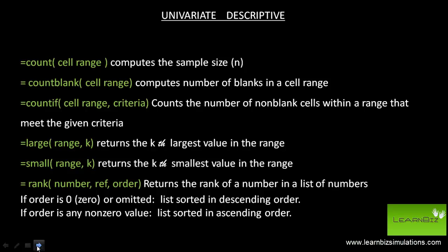Large returns the kth largest value. Small returns the kth smallest value. If k is less than or equal to zero or k is larger than the number of data points, the function large or small returns an error value.